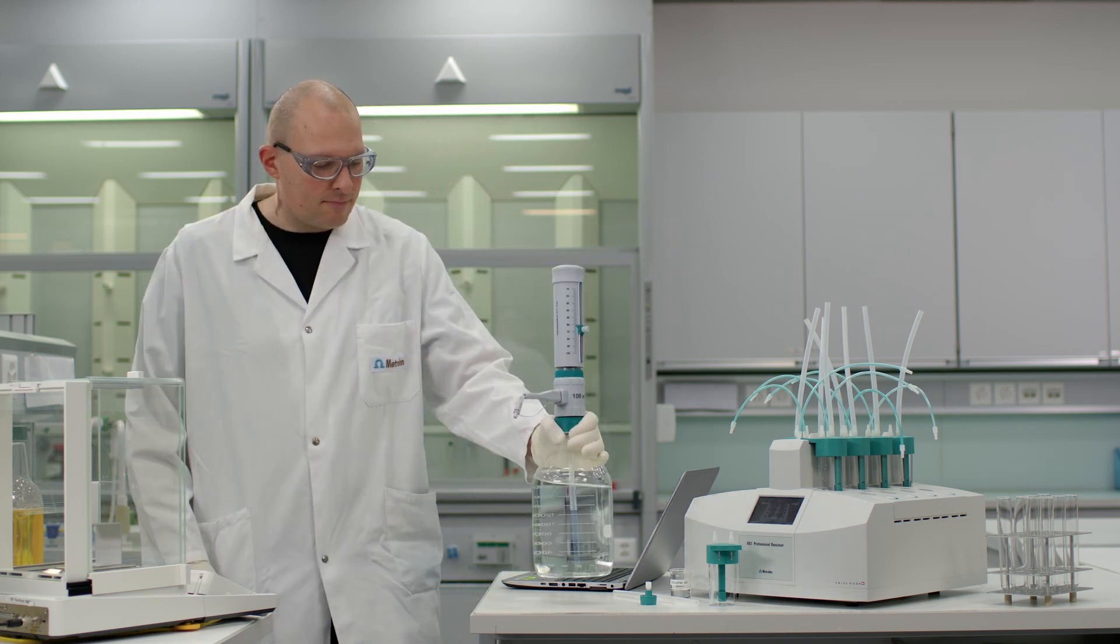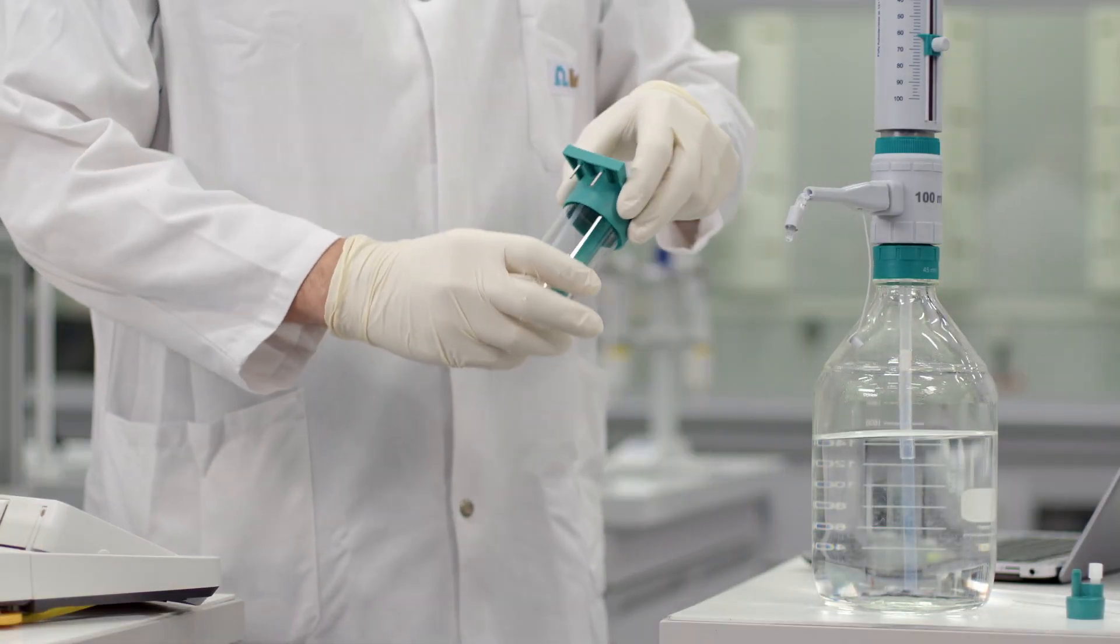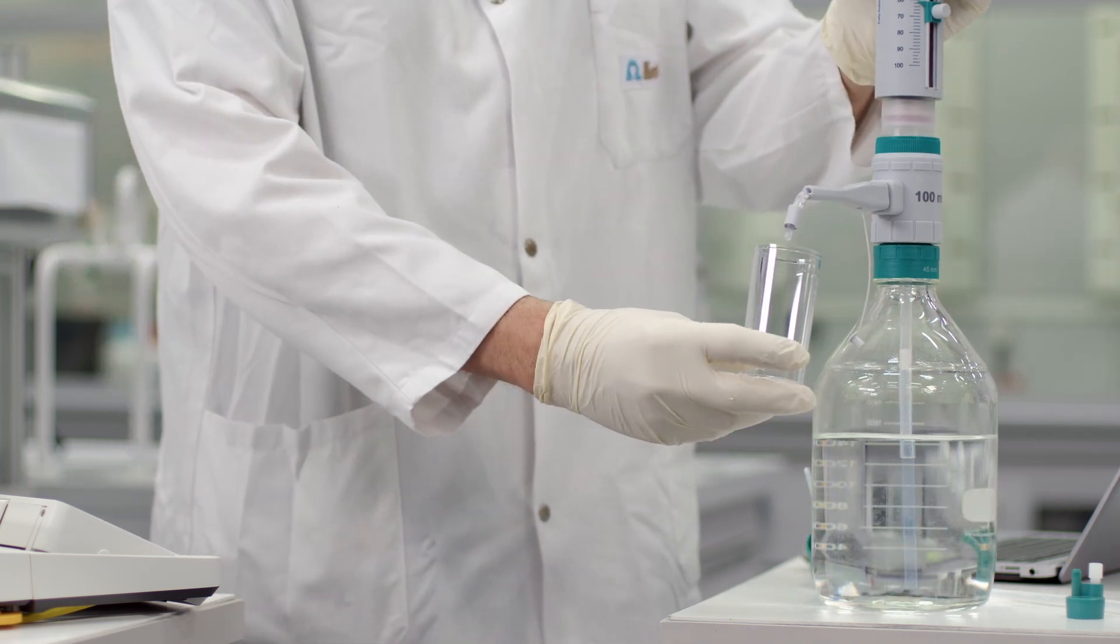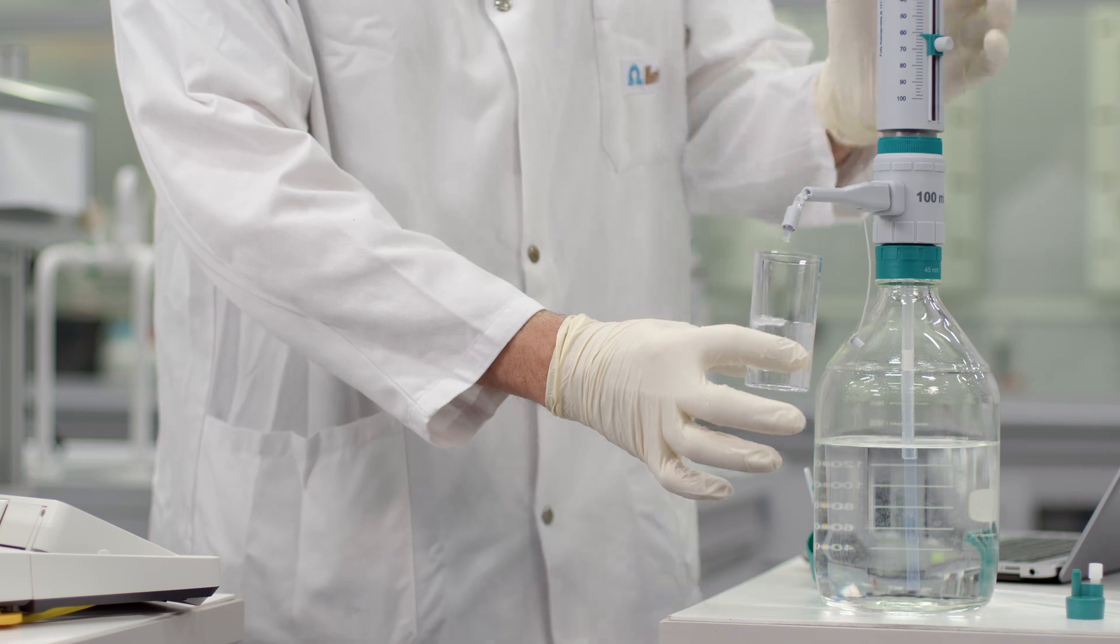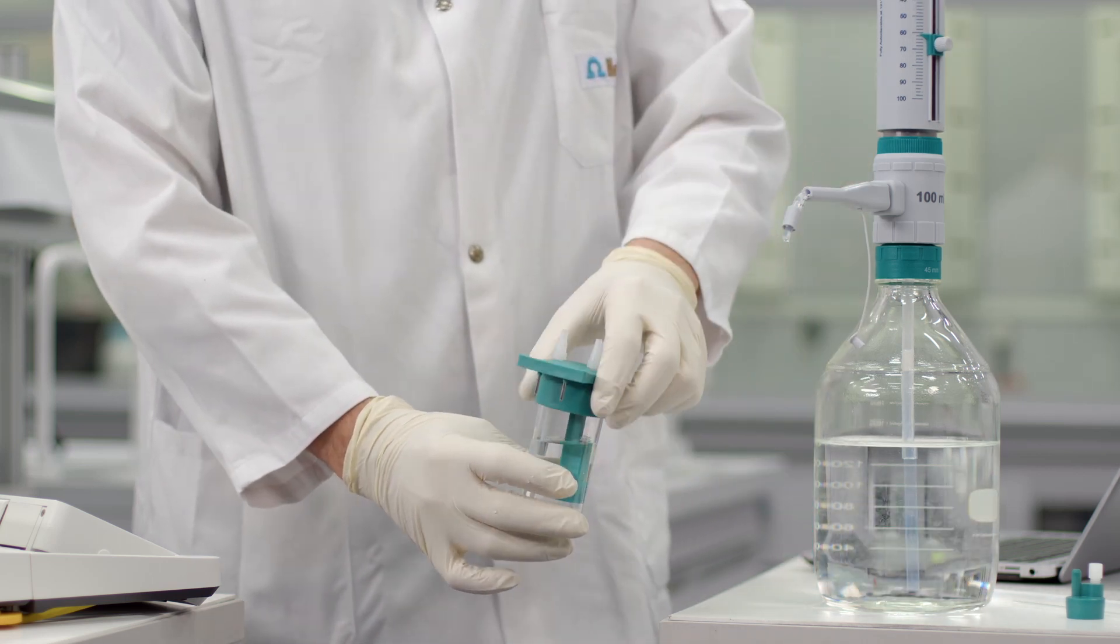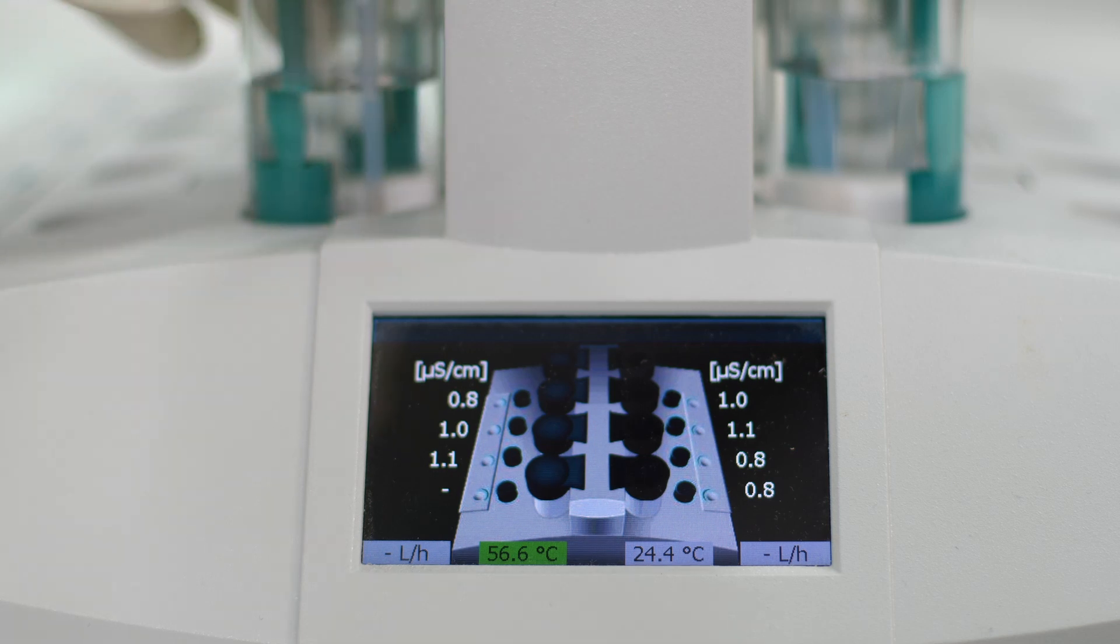Now fill the measuring vessel with 60 ml of distilled water and close it with the measuring vessel cover. Place the measuring vessel onto the instrument. The conductivity is immediately displayed on the front panel. Now everything is ready to start the measurement.